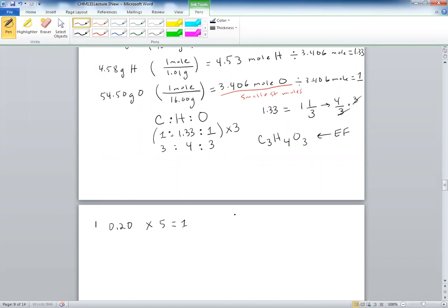If you have 0.25, you multiply by 4, and that would give you 1. 0.33, we just did this one, multiply by 3 and that gives you 1. And 0.5 would multiply by 2 and that would give you 1. And so on, but these are the common ones.